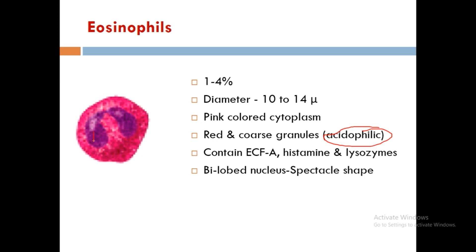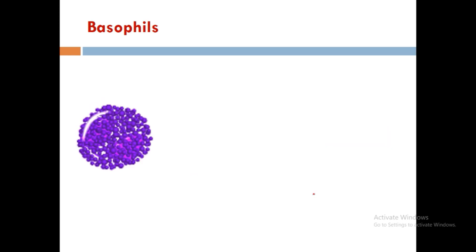Eosinophils have a bi-lobed nucleus which is spectacle-shaped — two lobes connected in a shape that looks like spectacles. Their function is anti-parasitic and anti-allergic.